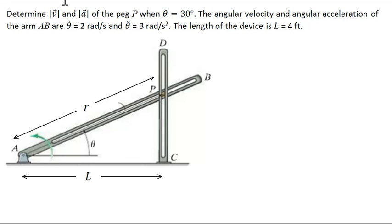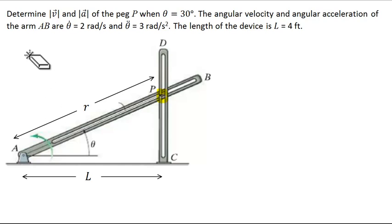We want to determine the magnitude of the velocity and acceleration of peg P. The bar AB rotates counter-clockwise, and we want to figure out the magnitude of the acceleration of point P.